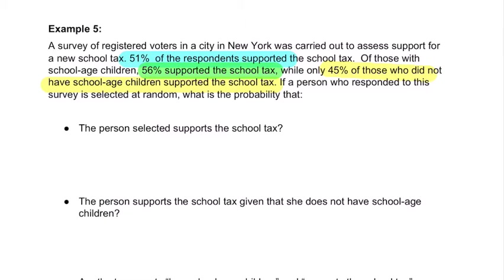They don't have us referencing any tables or specifics — we'll use what they gave us. It says 51%, or 0.51, supported. Done. That's the information right there.